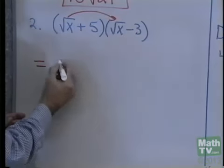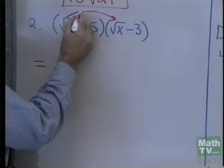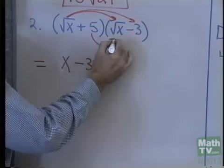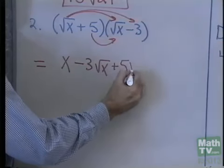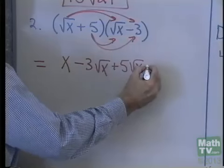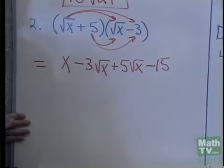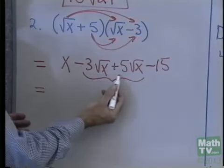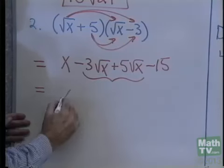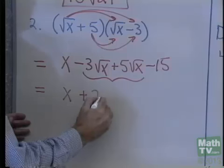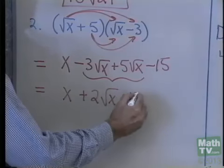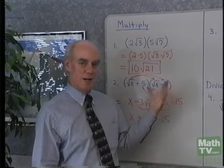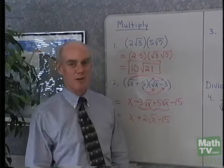Square root x times square root x will be x. Square root x times negative 3 gives minus 3 square root x. Then 5 times square root x gives plus 5 square root x. And 5 times negative 3 will be minus 15. Now I have two similar radicals here — minus 3 square root x and 5 square root x — so I end up with x plus 2 square root x minus 15. I do that multiplication just like I was multiplying binomials.